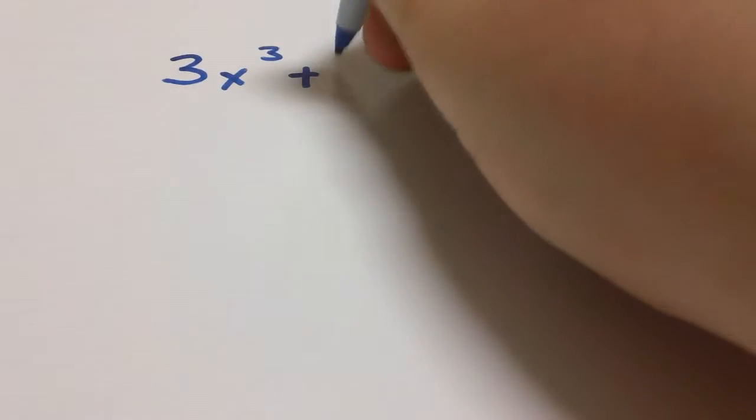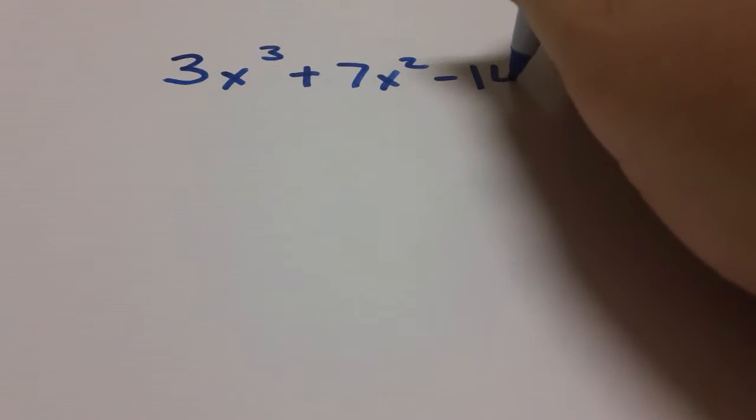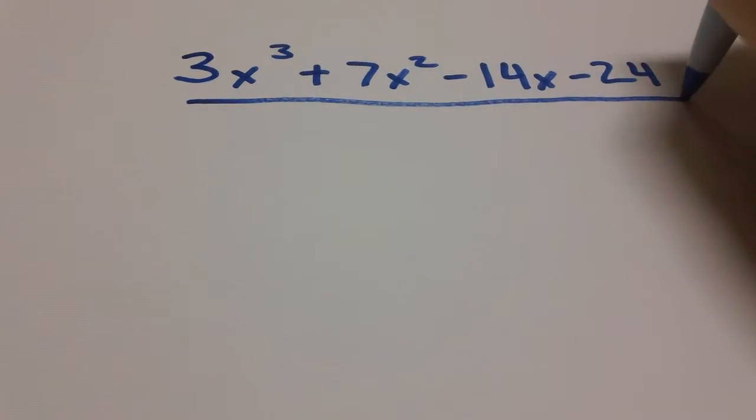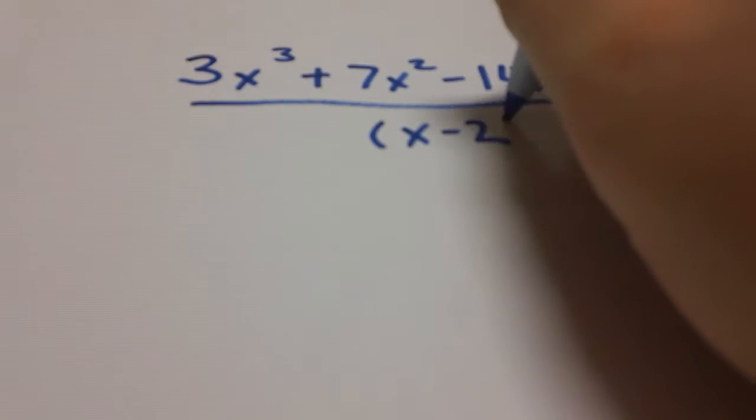An example problem you might see would be something like 3x to the third, as I said has to be greater than 2, plus 7x to the second minus 14x minus 24, divided by let's do x minus 2.